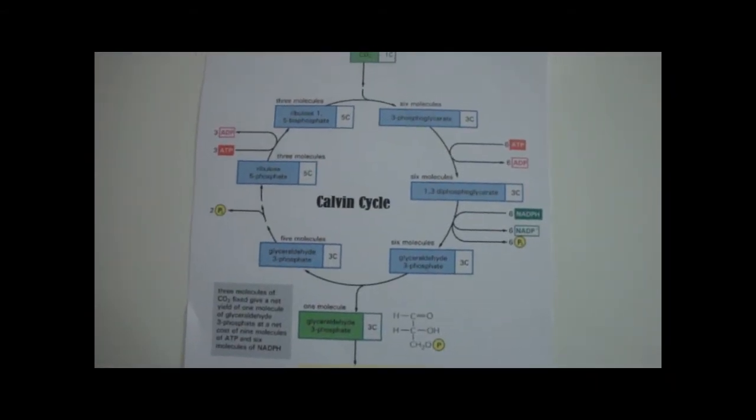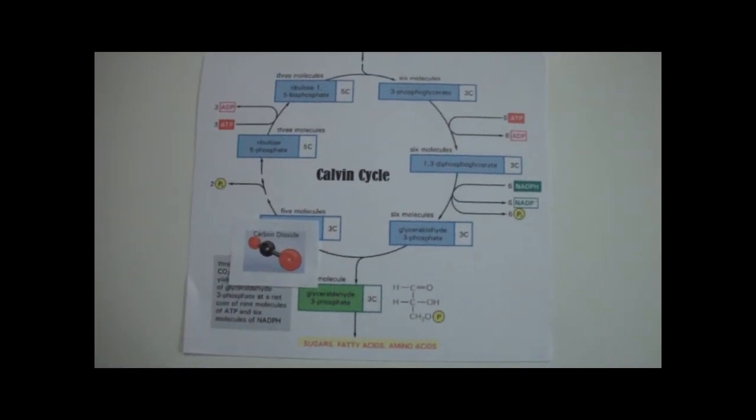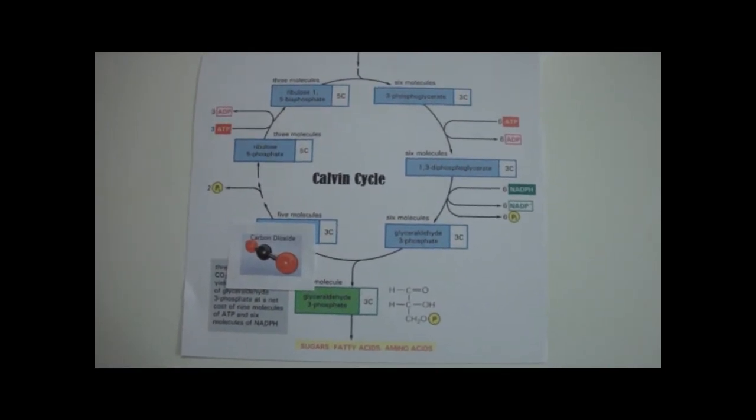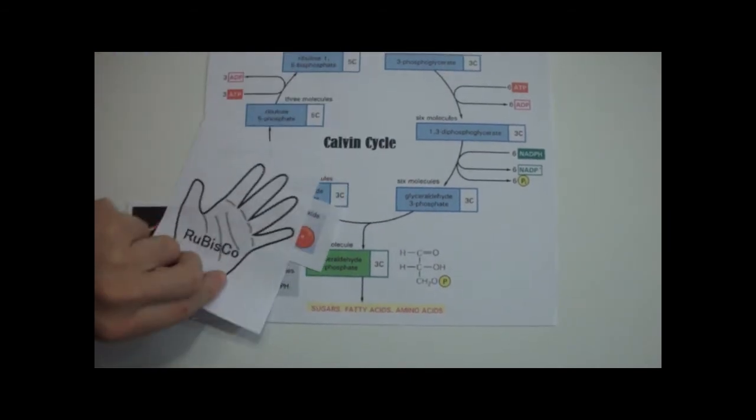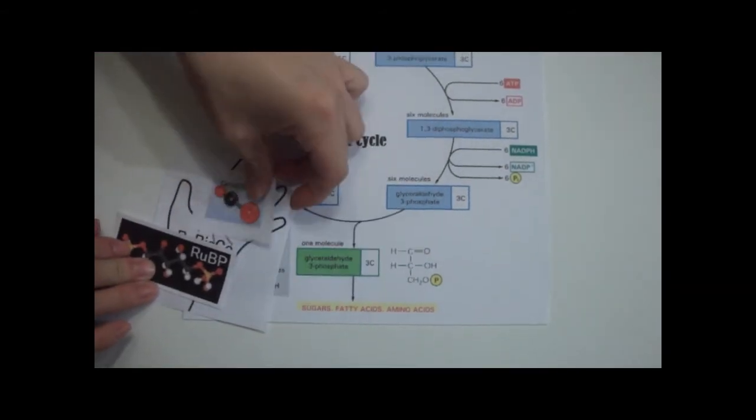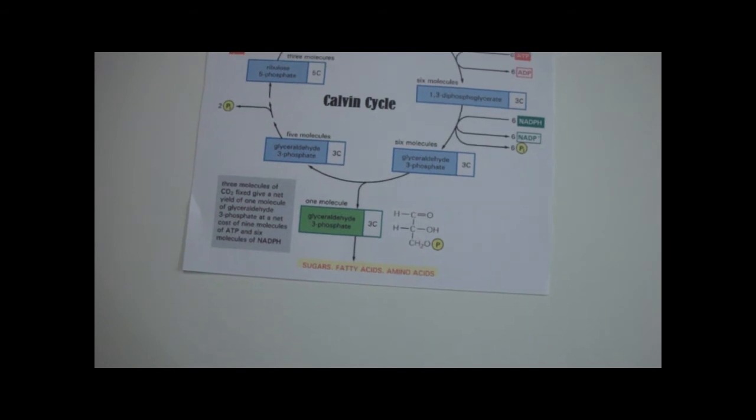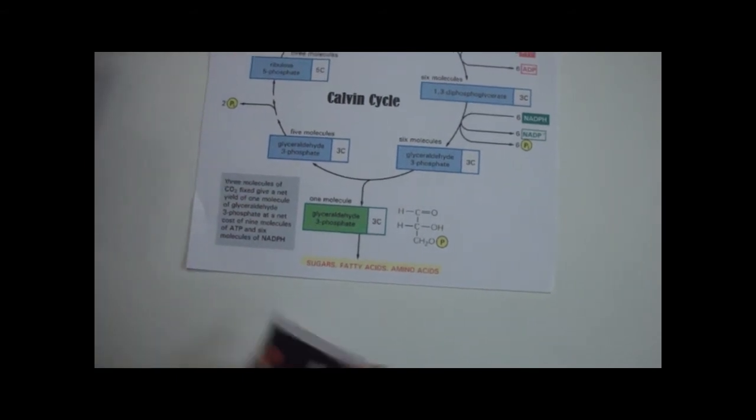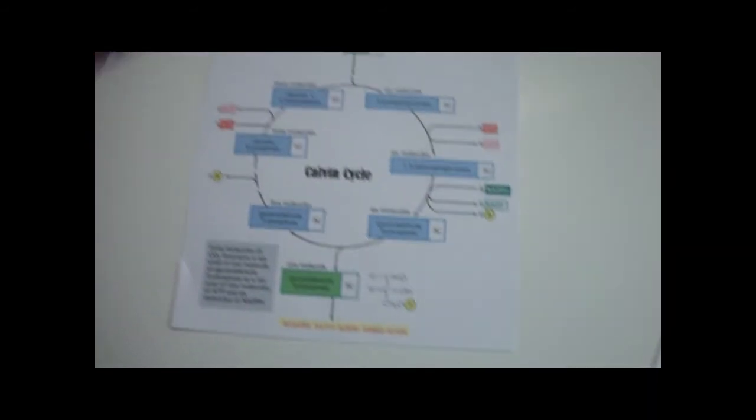Carbon fixation is the process by which carbon dioxide is attached to an organic compound, in this case, RuBP. This is done through the enzyme rubisco, which is the most abundant protein in the chloroplast. This forms an extremely unstable 6-carbon intermediate, which breaks apart into two molecules, 3-phosphoglycerate. This is done three times for a total of six molecules of 3-phosphoglycerate.